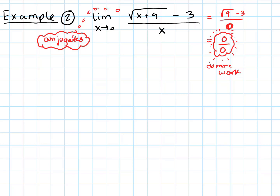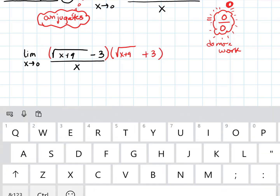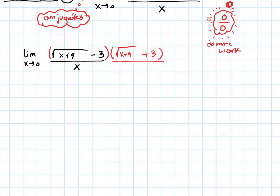The 0/0 tells us there's probably some algebraic simplification we can work with. Since this has a root in it, we'll try working with the conjugate. The conjugate of the numerator √(x+9) - 3 is √(x+9) + 3, so we'll multiply numerator and denominator by (√(x+9) + 3).